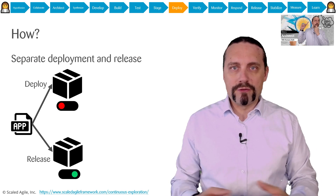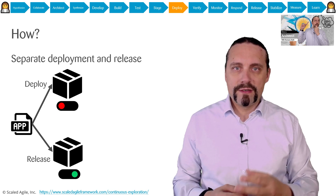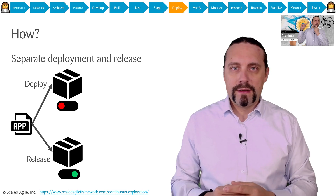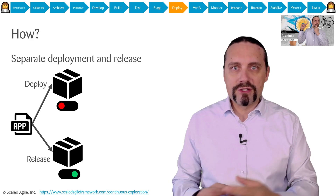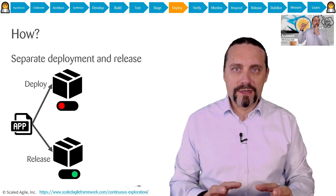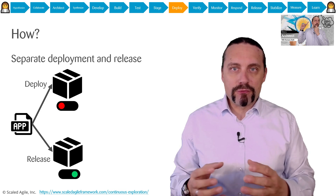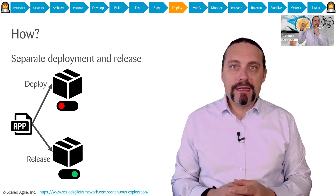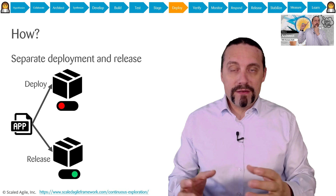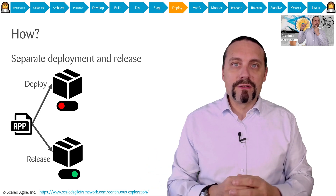To continuously deploy into the production system we need to separate deployment from release. A deployment is bringing the compiled code into production with the feature switch off. A release is switching the feature switch on in the production environment. Separating deployment from release enables us to continuously deploy into production. It's important that when architecting a system, we already architect it so that we can separate deployment from release.